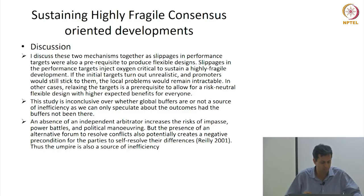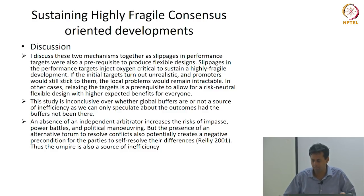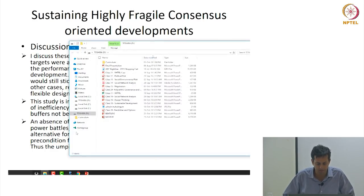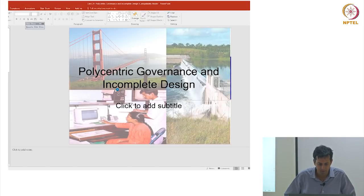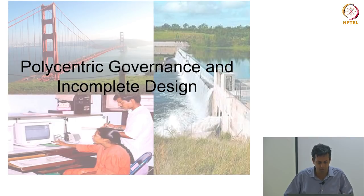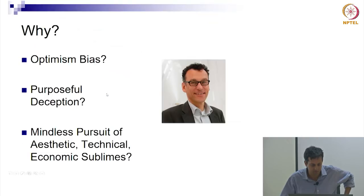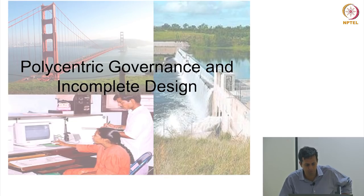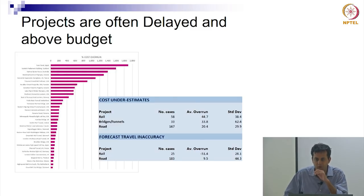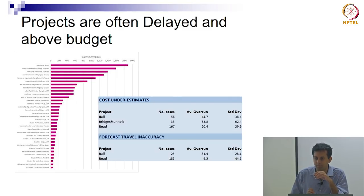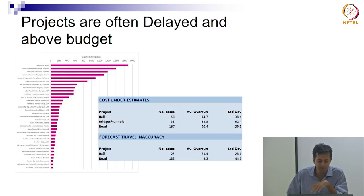A lot of information has been presented but a few threads need to be tied together on what all of this means and where nested umpires, flexible design, and all of that comes in. First, we have been talking a lot about stakeholders, but if we forget external stakeholders and just look at project performance in terms of time and cost, there is enough statistics to show that projects are heavily delayed — particularly these mega projects — and many are above budget.